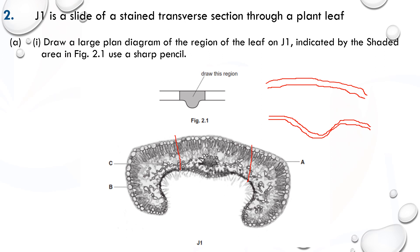Now let me draw the palisade here, which is somewhere here. That's the palisade. Let me try to see if I can get something better - the lines are not supposed to touch. This is the lower epidermis - a thin layer. And here is the vascular bundle above the midrib.